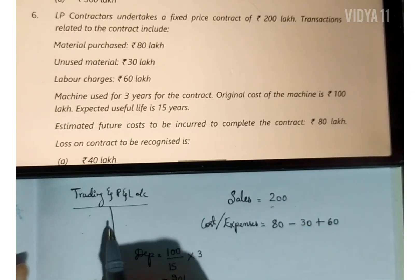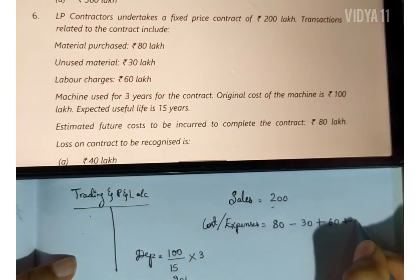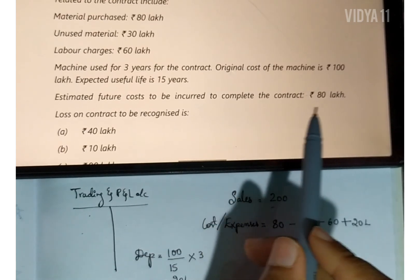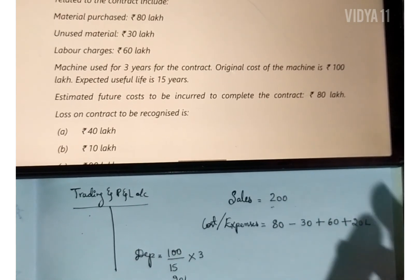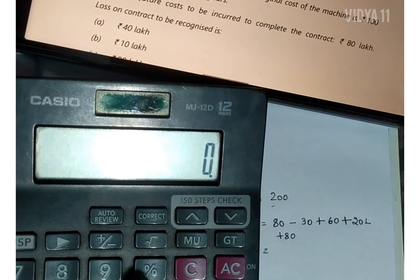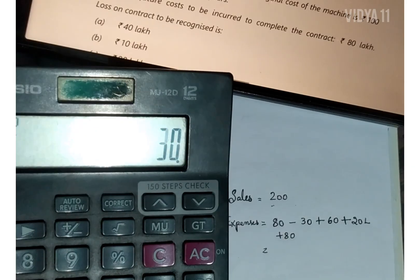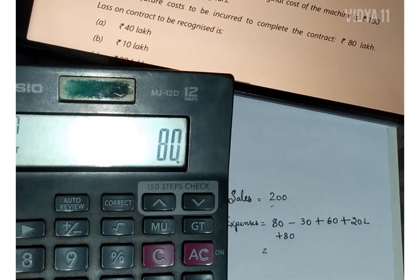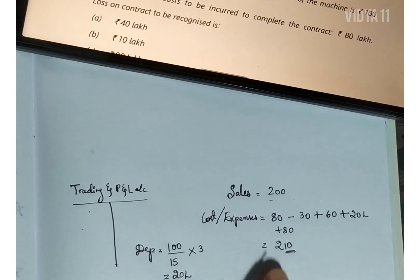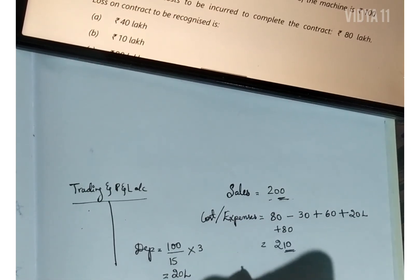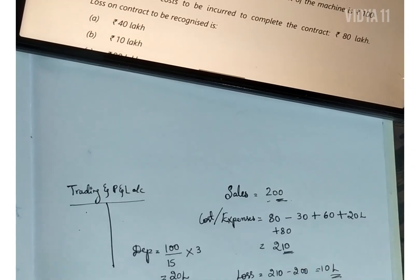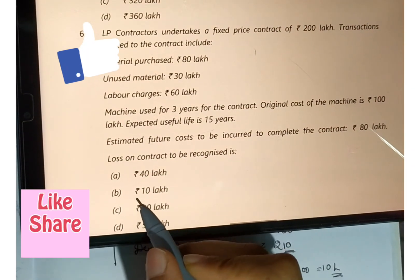Depreciation expense on the debit side is 20 lakh. Estimated future cost to complete the contract is 80 lakh. Total cost = 80 − 30 + 60 + 20 + 80 = 210 lakh. We incur 210 lakh but receive only 200 lakh on the fixed price contract, so the loss is 210 − 200 = 10 lakh — option B.